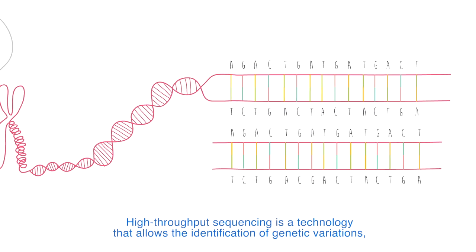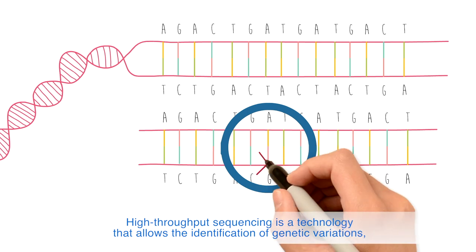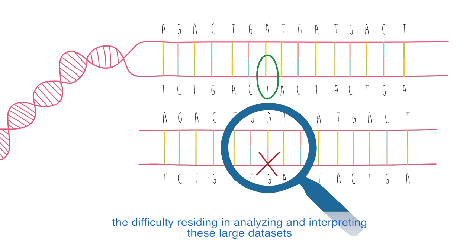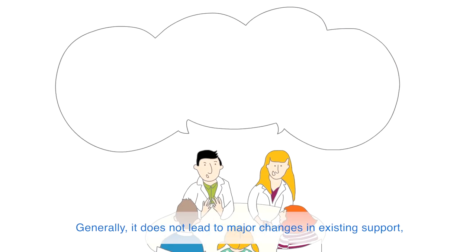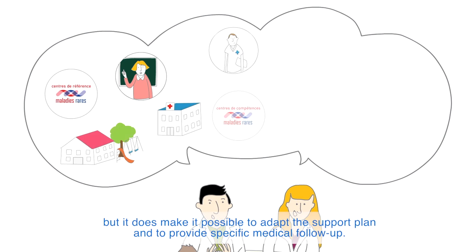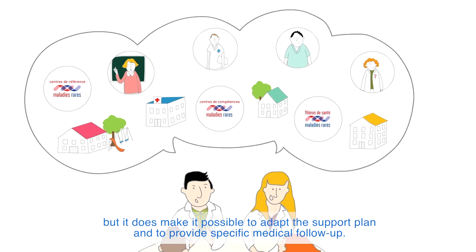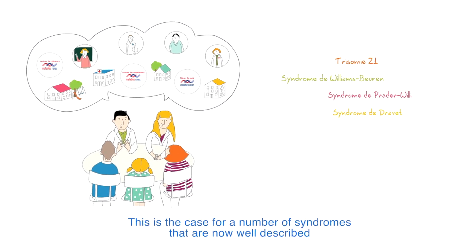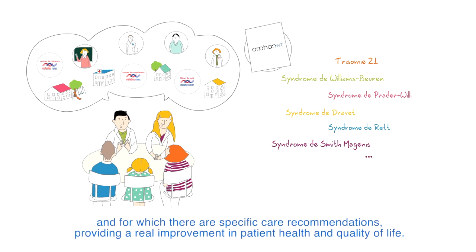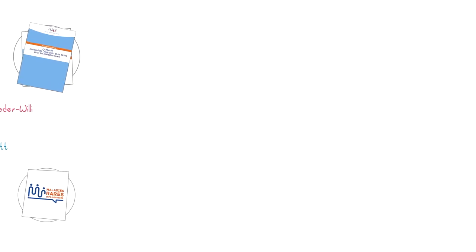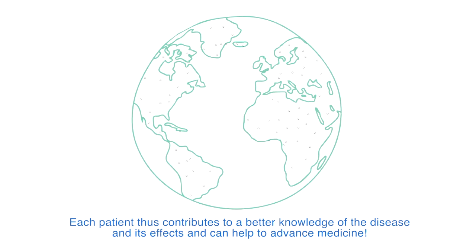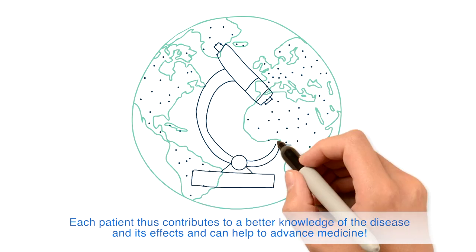High-throughput sequencing is a technology that allows the identification of genetic variations, with the difficulty residing in analyzing and interpreting these large datasets to establish a link between the variations seen in a gene and the disease. The discovery of a genetic anomaly is an important step for families. Generally, it does not lead to major changes in existing support, but it does make it possible to adapt the support plan and to provide specific medical follow-up. This is the case for a number of syndromes that are now well described, and for which there are specific care recommendations, providing a real improvement in patient health and quality of life. Each patient thus contributes to a better knowledge of the disease and its effects, and can help to advance medicine.